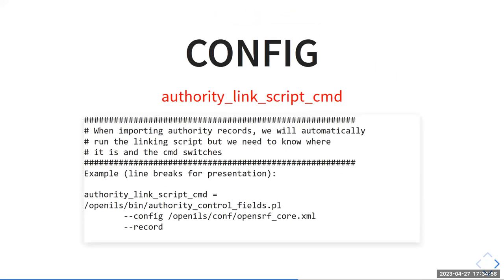For authorities, this tool needs to know the path to the authority script — an Evergreen script typically at a standard location on your server, but configurable here. The authority link script cmd config takes the whole command string as it would be run on the command line. Note that the line breaks shown are just for the presentation — in the actual config file that would be one line.